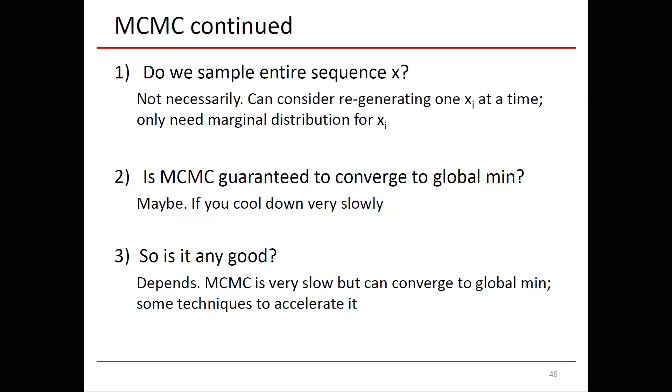Some questions. Do we sample the entire sequence X each time? Not necessarily. We can consider regenerating one location Xi at a time, and we only need to calculate the marginal distribution for Xi. Is MCMC guaranteed to converge to the global minimum? Maybe. You need to cool very slowly to have performance guarantees. And cooling very slowly, recall you're only modifying a single Xi at a time. You need a ton of iterations. To actually get any guarantees, you need an exponential number of iterations, so not really that useful.